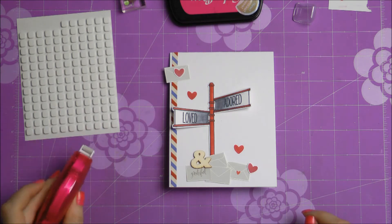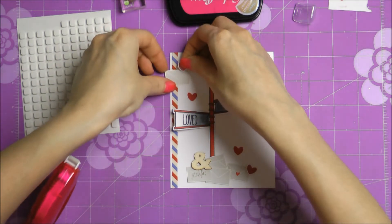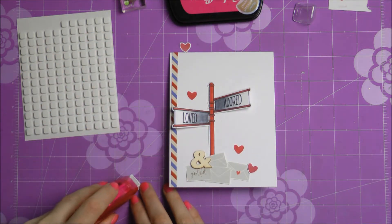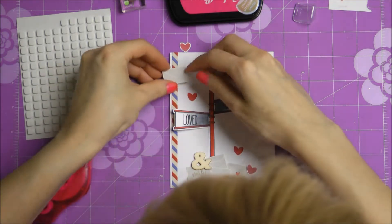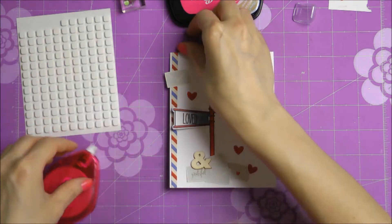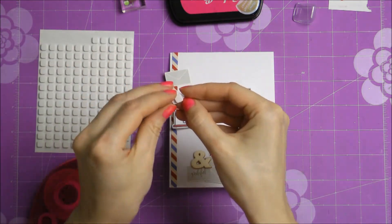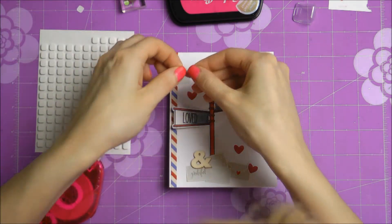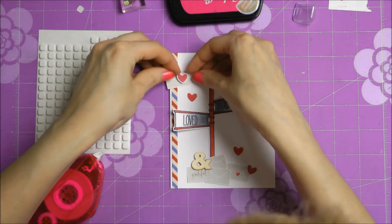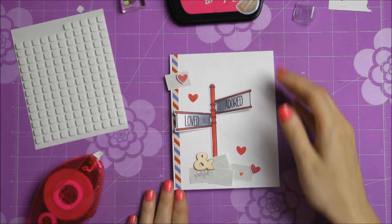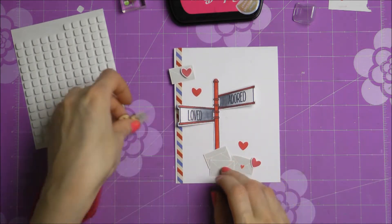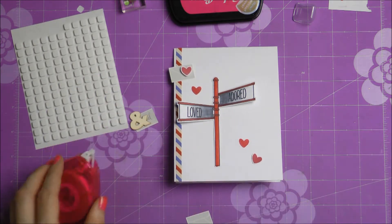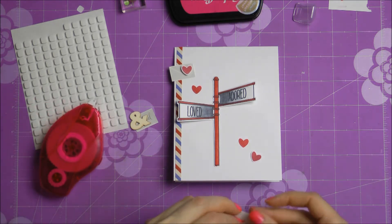I also added a little ampersand to the bottom of my card just above that tiny envelope there. And I chose that particular wooden element just because I wanted to tie the sentiment together. So here I have a stamped loved and adored and I have a little grateful together with that wooden end at the bottom of my card.